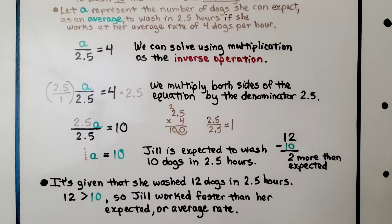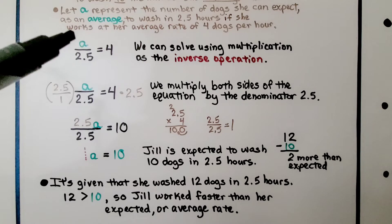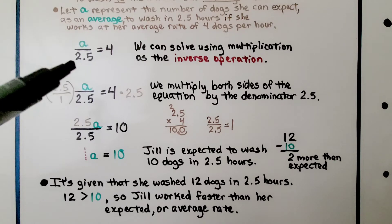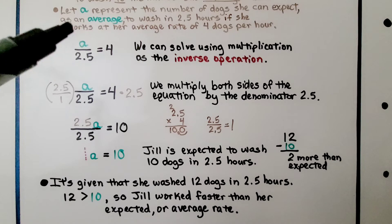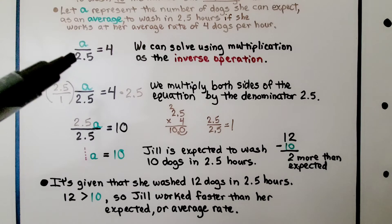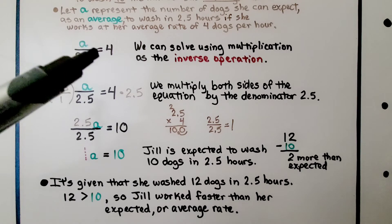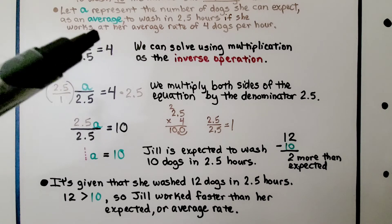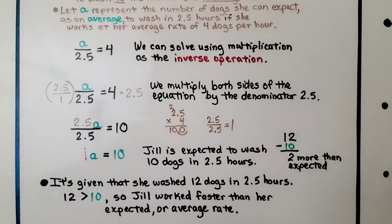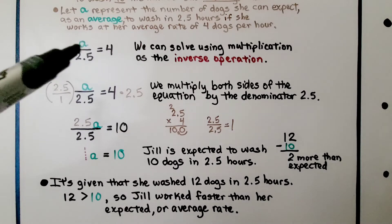Our equation is A divided by 2.5 equals 4, because she can normally do 4 in 1 hour. We can solve using multiplication as the inverse operation.